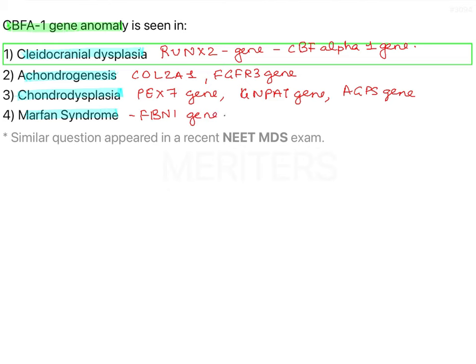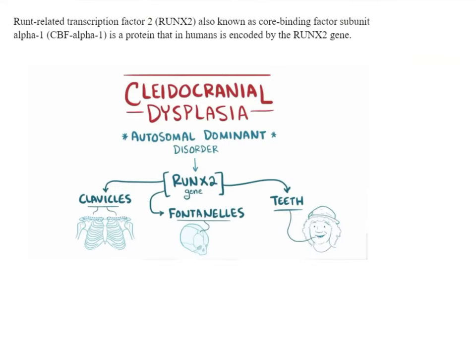Now let's look at each condition one by one. First is cleidocranial dysplasia, caused by the RUNX2 gene, also known as CBF A1 gene. The full forms are: RUNX-related transcription factor 2, or core binding factor subunit alpha 1. It is an autosomal dominant disorder. Three important features are affected: clavicles — which may be hypoplastic or congenitally absent — impaired frontal fusion, and teeth abnormalities including multiple missing, impacted, and supernumerary teeth.